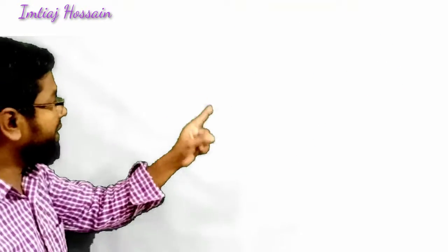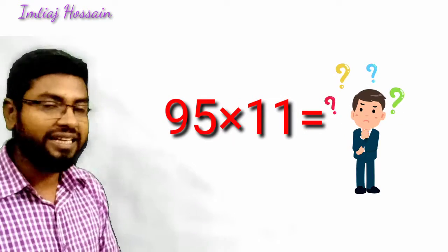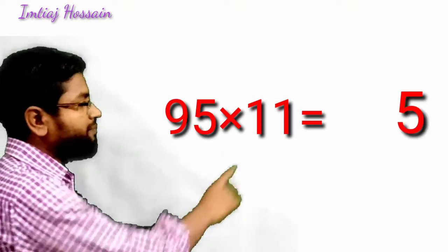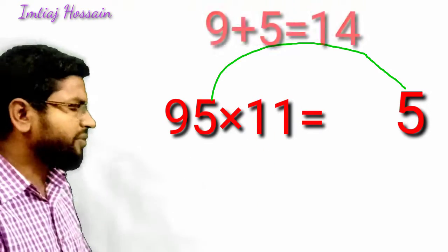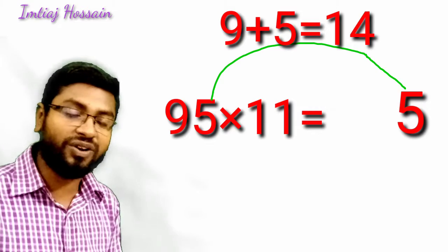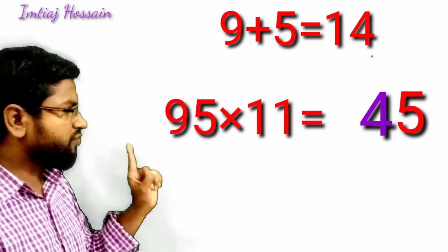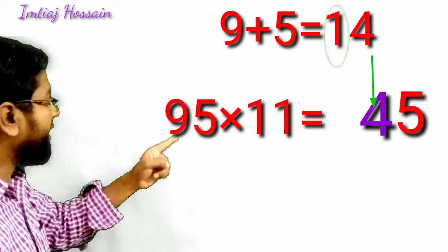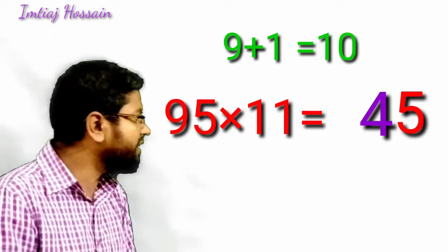95 times 11. I will put this 5 as the last digit. If I add 9 and 5, what will it be? 14. 14, there will be one digit, not two digits. So I will write 4 and 1 will be carried. That 1 will be added to the first digit 9. 9 and 1 is 10, so it will be 1,045.